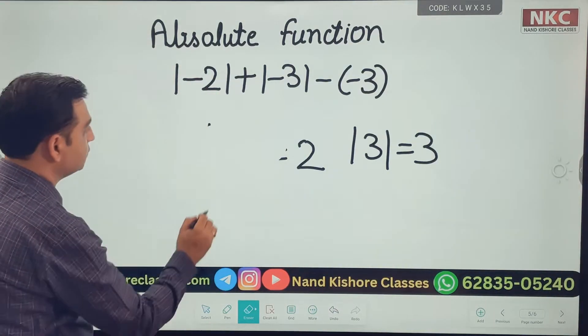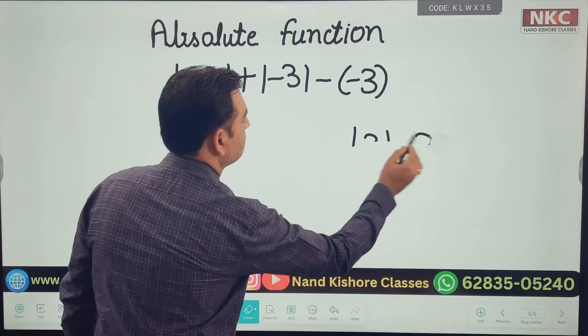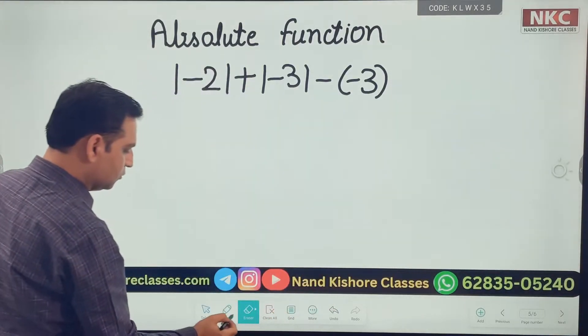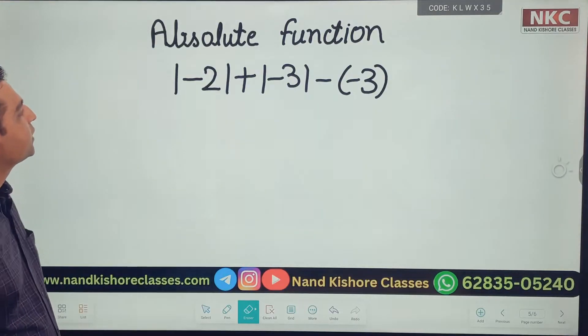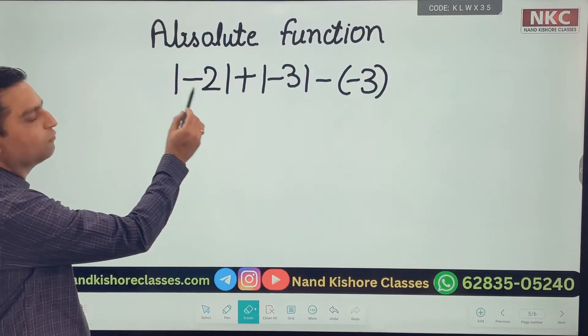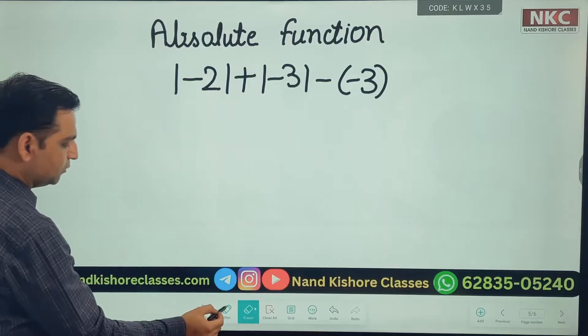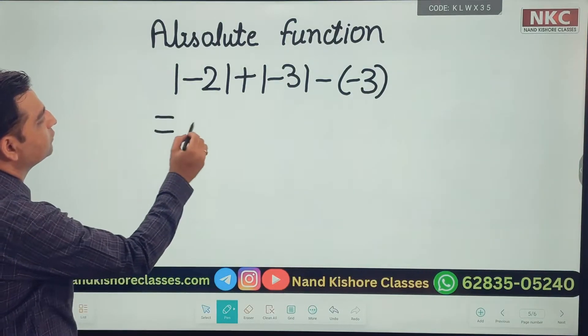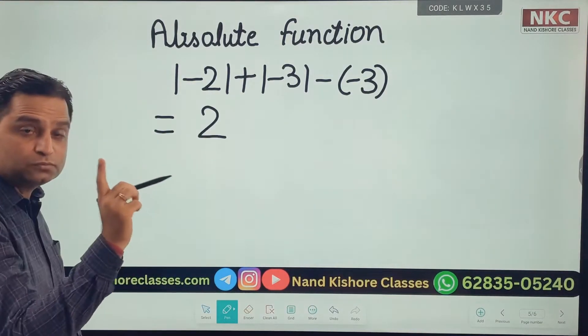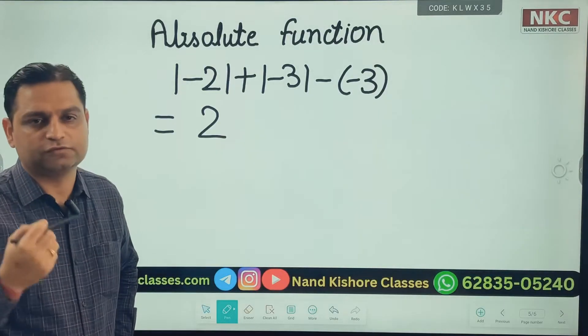Now let us try to do the question which is on the board. I hope there will be no further confusion. Now check it. Absolute value of minus two. The absolute value of minus two is only two. Keep it in mind, negative is changed to positive.